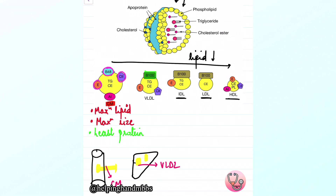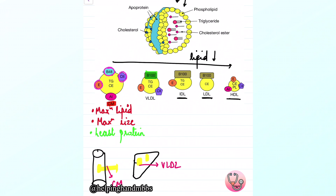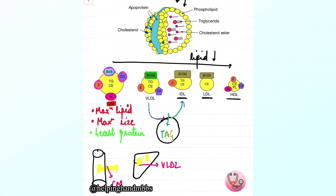IDL — intermediate density lipoprotein — is actually formed after VLDL. When VLDL reaches a peripheral organ and gives away its triacylglycerol, whatever is left behind is IDL. It is just a remnant of VLDL. Because its lipid content has reduced, its density has increased compared to VLDL.